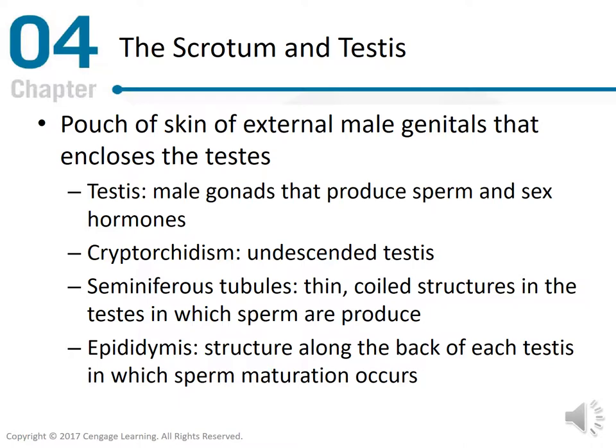The scrotum and the testes. The scrotum is the pouch of skin of external male genitals that encloses the testes. The testes are the male gonad that produces sperm and sex hormones. Cryptorchidism refers to undescended testes. Seminiferous tubules are thin coiled structures in the testes in which sperm are produced. The epididymis is the structure along the back of each testes in which sperm maturation occurs.